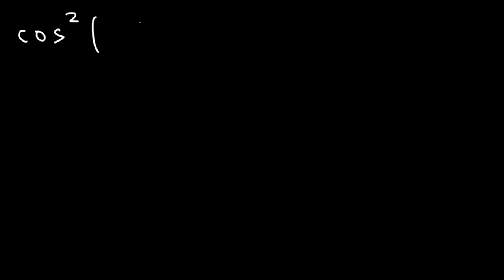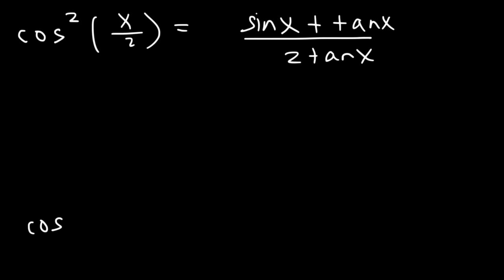Go ahead and show that cosine squared x divided by 2 is equal to sine x plus tangent x divided by 2 tan x. Cosine x over 2.